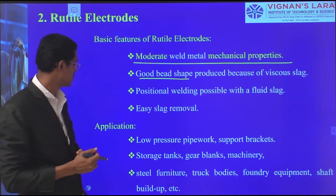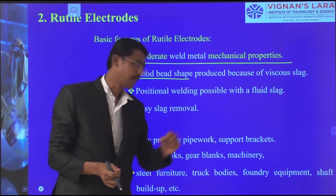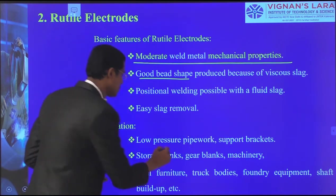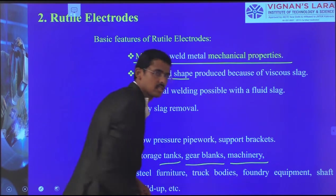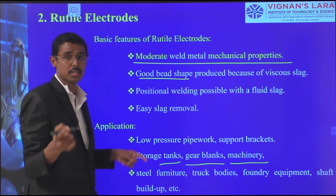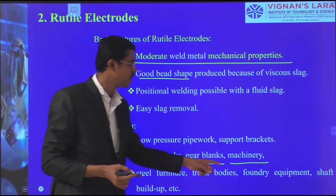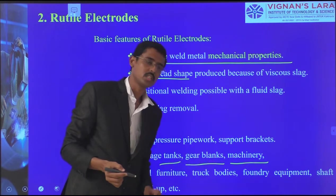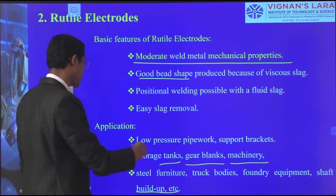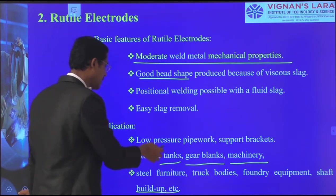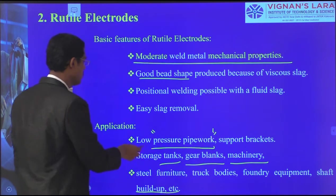Applications of rutile electrodes include: low pressure pipe work, supporting brackets, storage tanks, gear blanks, machinery, steel furnaces, truck bodies, foundry equipment, and shaft builds. They can be used for general-purpose welding, mainly in pressure pipeline works.